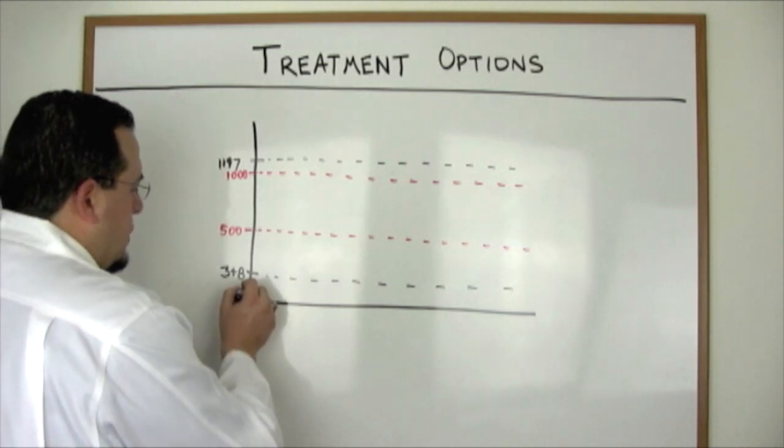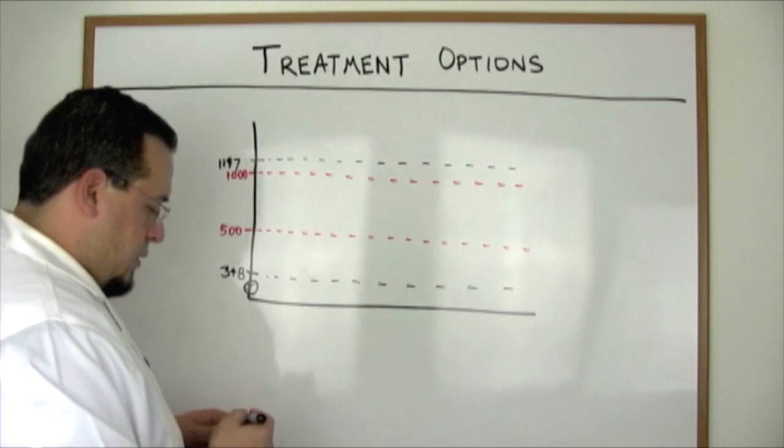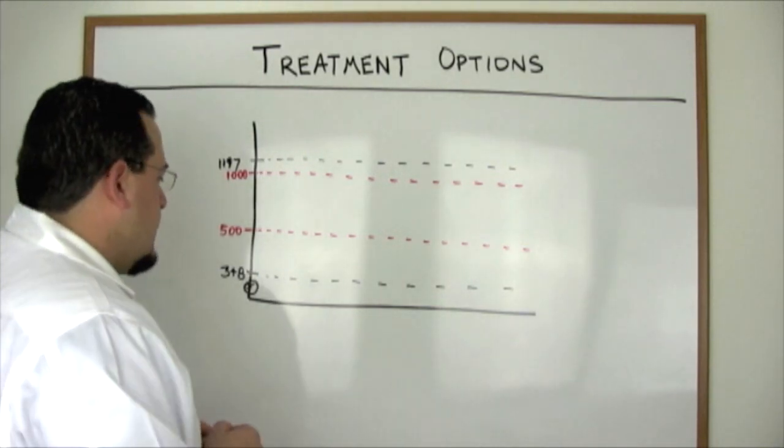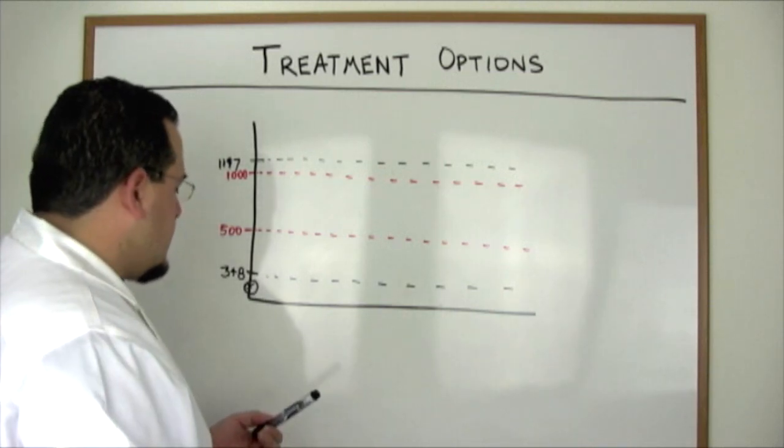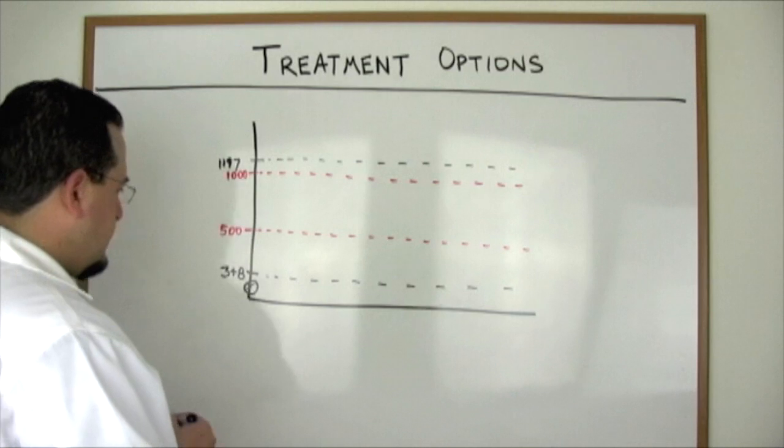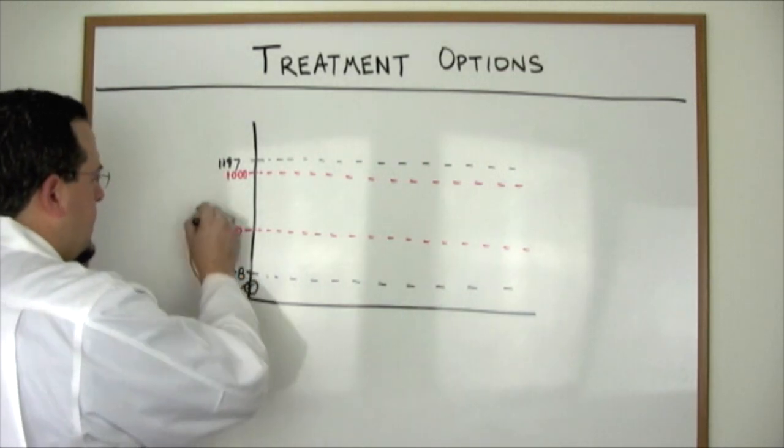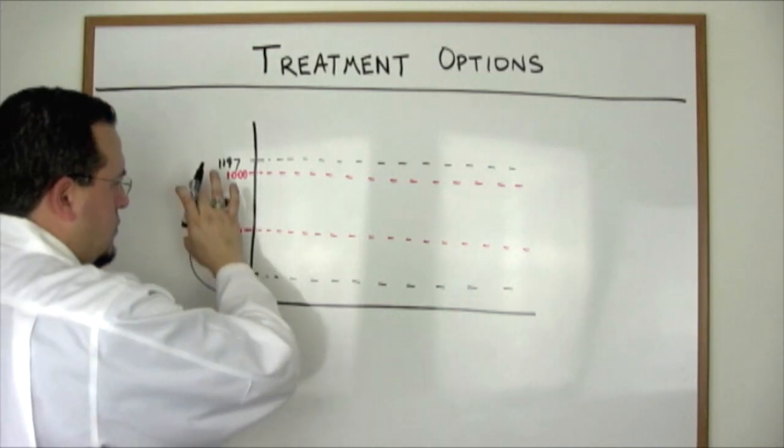For our discussion, we're going to assume the patient has a number that's low, below 348 nanograms per deciliter. This is something that's confirmed, as we talked about, through medical history, through symptoms, as well as laboratory results.